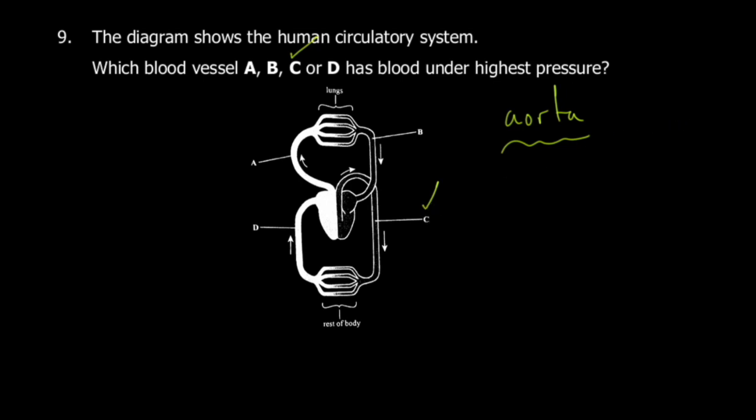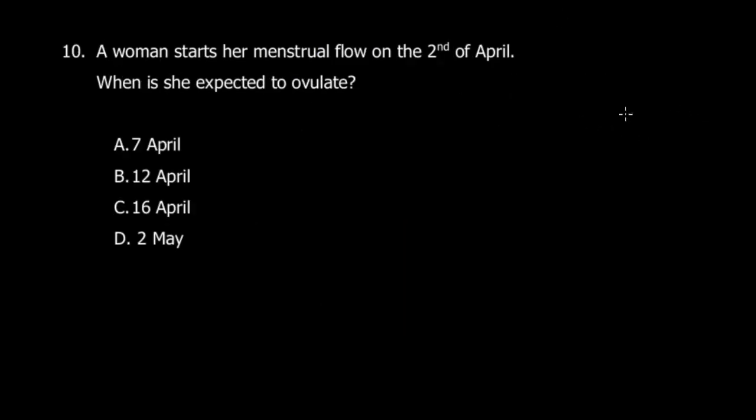Question ten: a woman starts her menstrual flow on the second day of April. When is she expected to ovulate? On the first day of menstruation, she goes through five days, then afterwards a certain number of days. But from the start of menstruation to when she's expected to ovulate is about 14 days. So if it's 14 days starting from the second, we expect her to ovulate on the 16th.